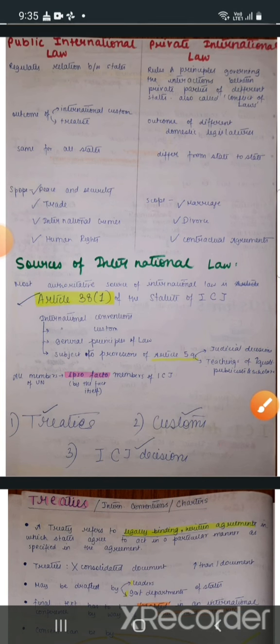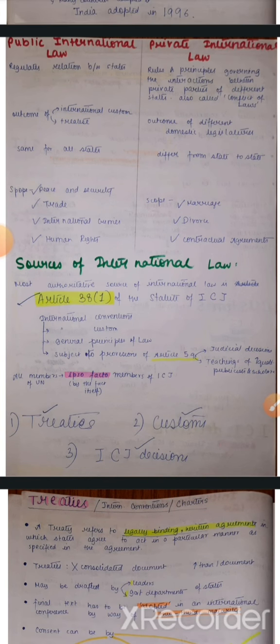In a nutshell, we have made a difference between public international law and private international law. One key point: public international law is the same for all states, because obviously in international conferences all countries discuss together and agree to the same law — so it's consistent. And private international law differs from state to state — India mein alag law hoga, Canada mein, England mein alag — because these are enacted within the domestic legislatures of the countries.